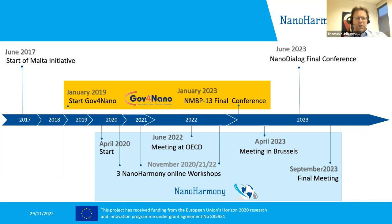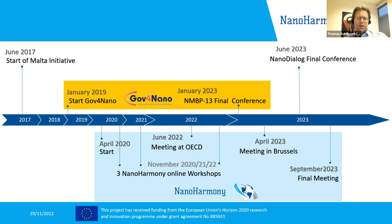NanoHarmony has held three workshops, always in November. In June, we were very happy together with the sister project NanoMet — represented here by Ann and Mar — to collaborate. Within NanoHarmony we had the opportunity to meet at the OECD to present what was achieved in terms of test guidelines and which direction to follow for the second half of the project.